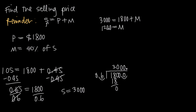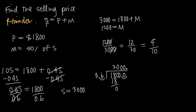Now we have to check that twelve hundred is actually forty percent of three thousand, since we said the markup was forty percent of the selling price. Is the twelve hundred dollar markup in fact forty percent of the three thousand dollar selling price? We check by computing twelve hundred over three thousand. Cancelling two zeros gives twelve over thirty. Dividing both by three gives four over ten, which is four tenths — forty percent. So twelve hundred is indeed forty percent of three thousand, confirming our answer.